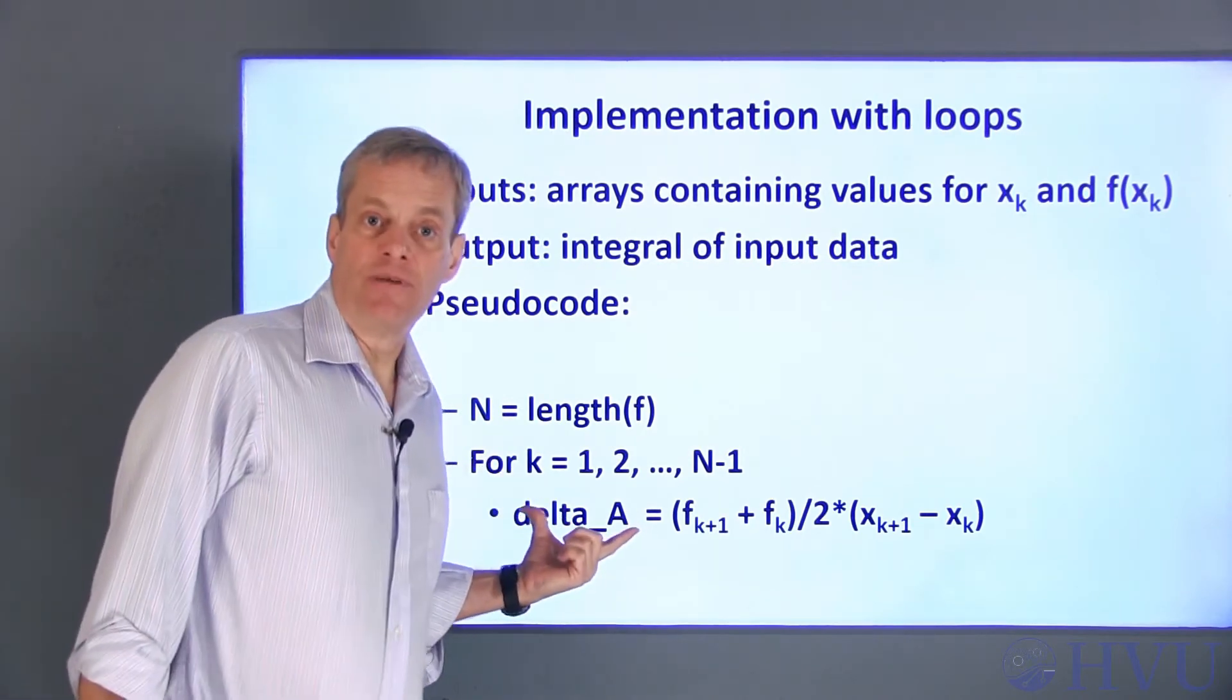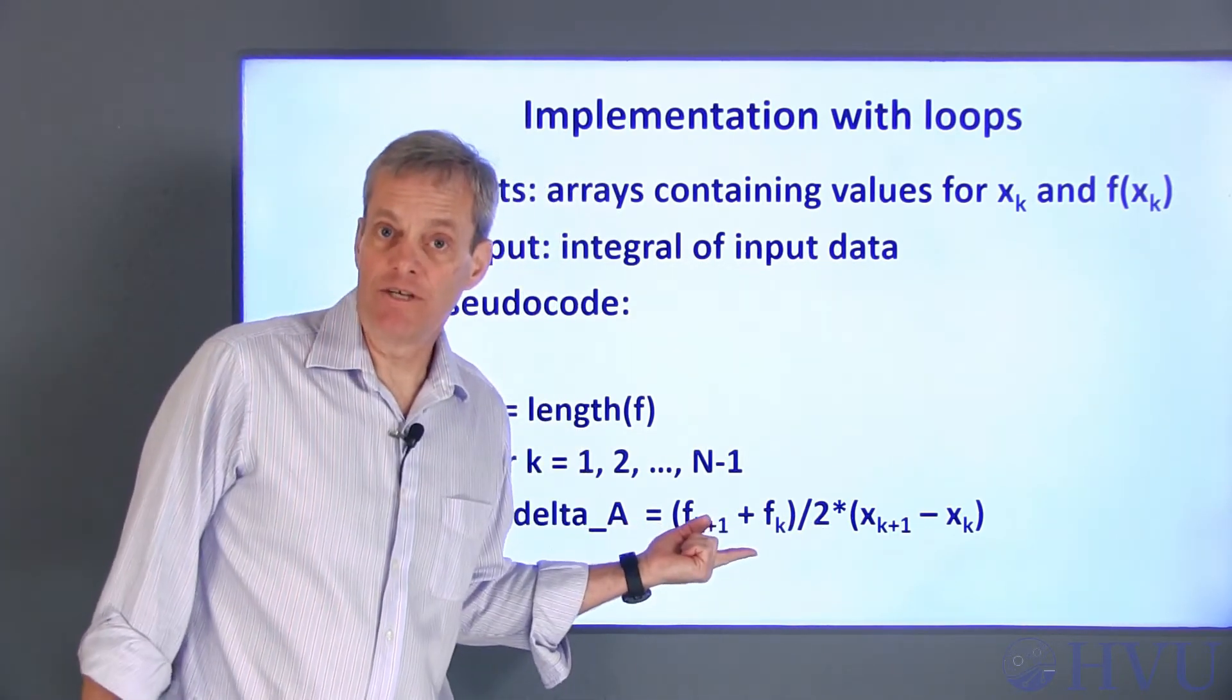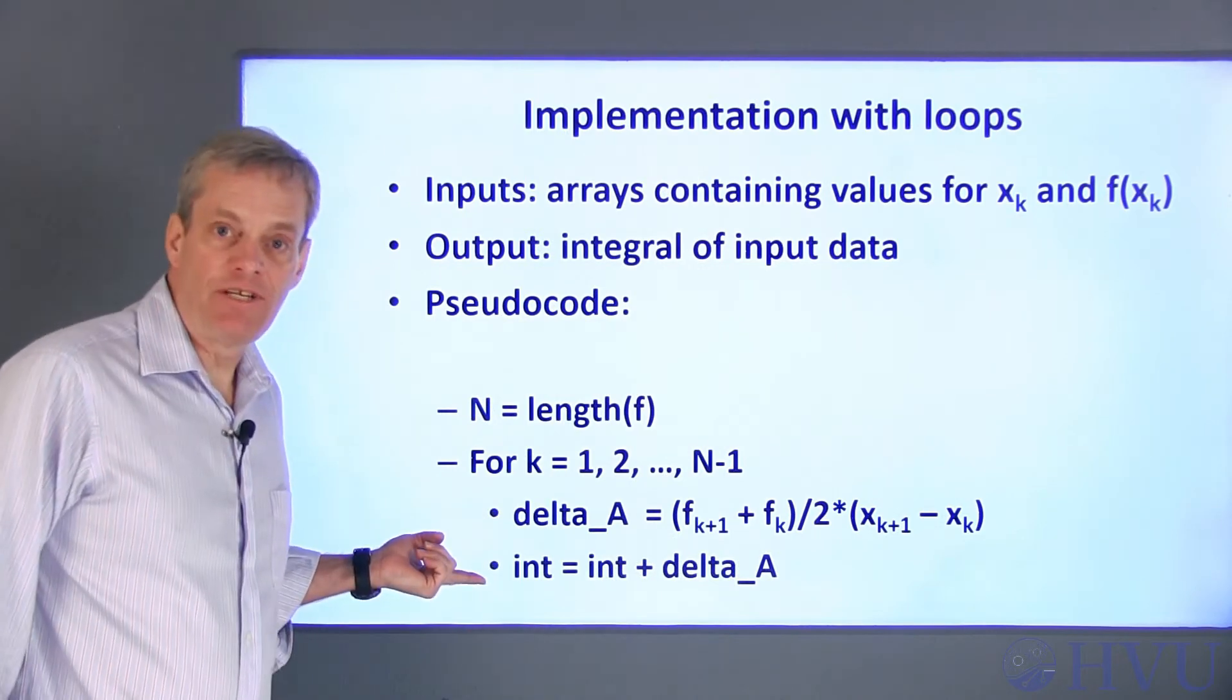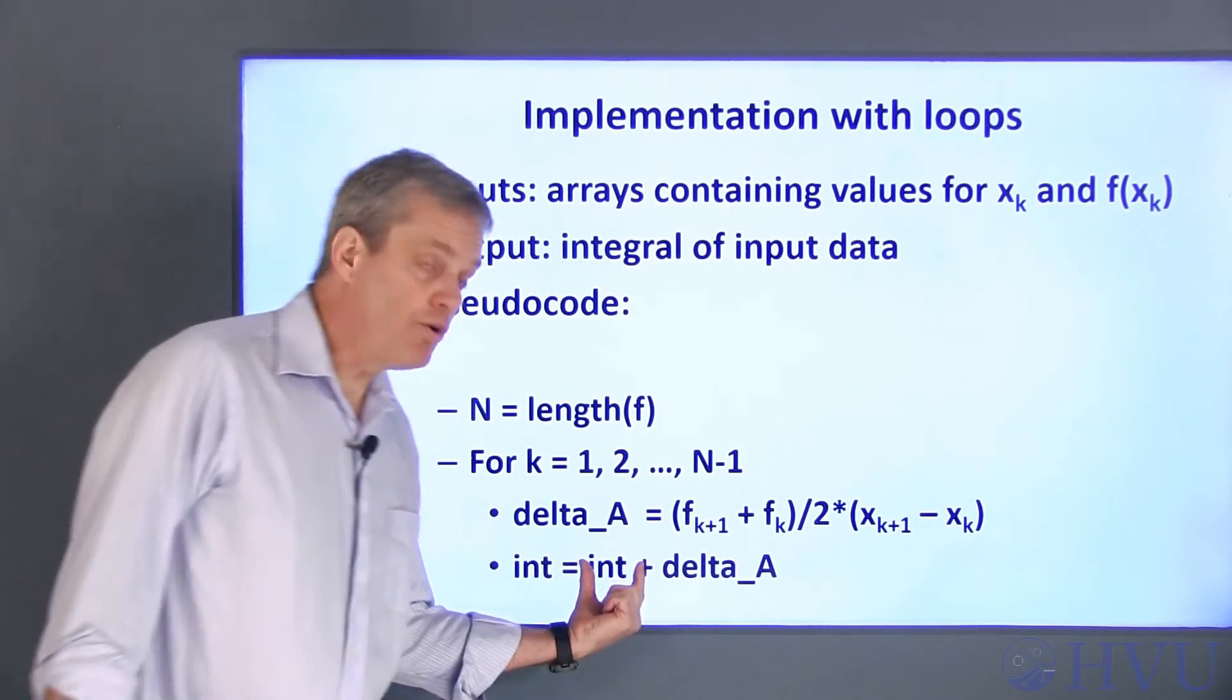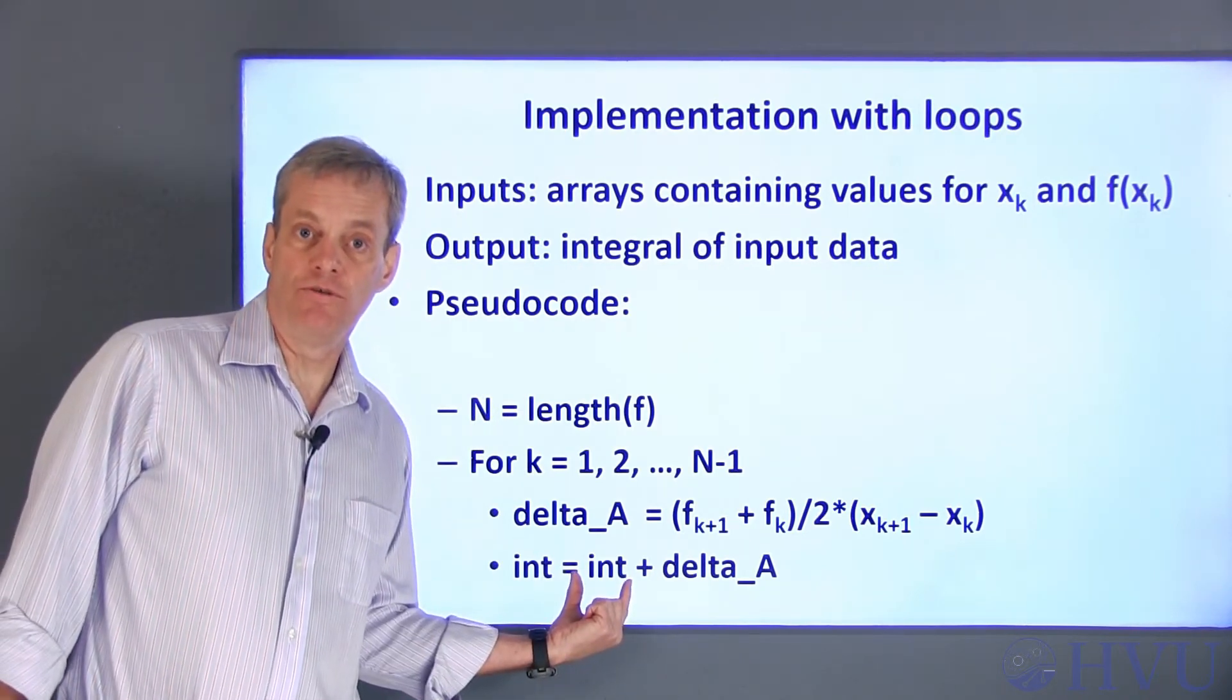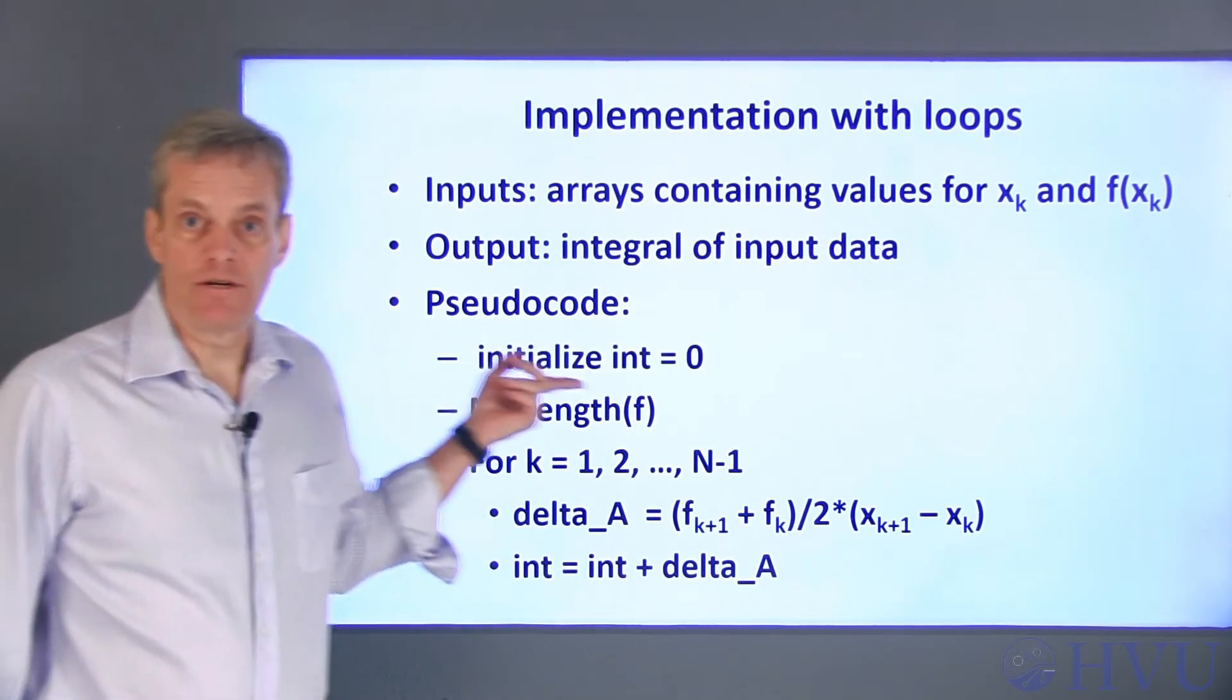I'll use k as my variable to keep track of which subinterval I'm working on. For each subinterval, I'll calculate an incremental area based on f of k plus 1 plus f of k divided by 2, which is the average value of the function, times the base of the rectangle which is x sub k plus 1 minus x sub k. Then I'll cumulatively sum all of the areas by setting int, the value of my integral, to its old value plus the differential area. Finally, I need to initialize int before the loop so that it's defined on the right hand side of this equation the first time through the loop. The integral is zero before I start calculating areas.